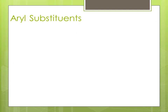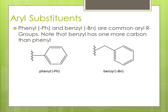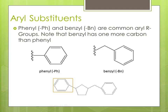Aryl substituents. Phenyl and benzyl are common aryl R-groups. Note that benzyl has one more carbon than phenyl. Also be aware that benzyl is abbreviated BN and not BZ. Here's an organic molecule using phenyl and benzyl substituents.